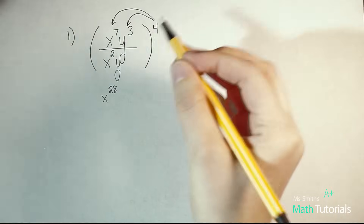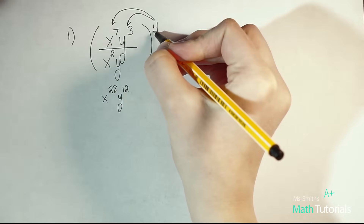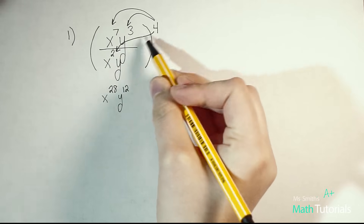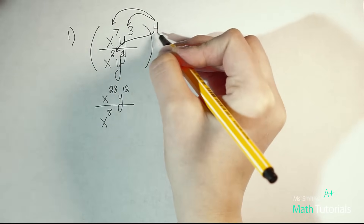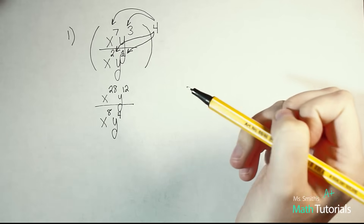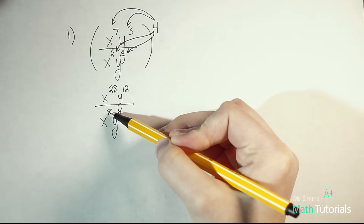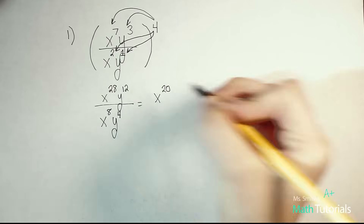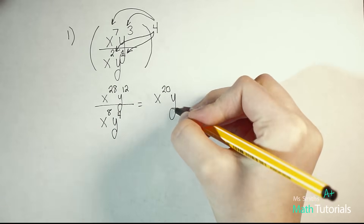Distribute the 4 to the y as well. y to the 3rd brought to the power of 4 — power to power means I multiply — y to the 12th. I'm also going to distribute this 4 to the bottom as well because it has to go to every single part of this problem. So y to the 2nd brought to the power of 4: 2 times 4 is 8. And y to the understood 1st brought to the power of 4: 4 times 1 is 4. Now I can divide and simplify the fraction. x to the 28th divided by x to the 8th — when we divide exponents we subtract — 28 minus 8 is x to the 20th. Then y to the 12th divided by y to the 4th: 12 minus 4 is y to the 8th.